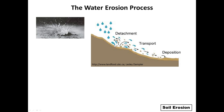Once that soil particle is detached, it will be transported and will move from the field and get deposited. The other two steps of water erosion are transport and then deposition of that particle. Deposition could be in the same field, in a waterway, or in a stream or lake. In my view, once that particle gets detached, we are already losing the battle with soil erosion.